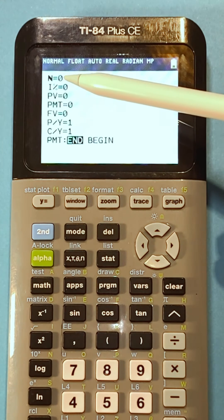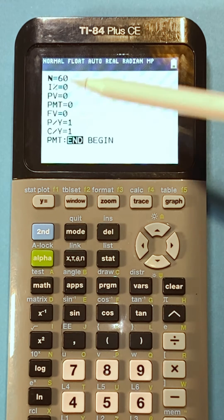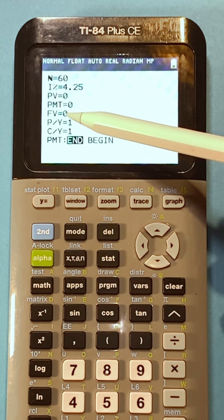N is always the number of compounding periods. I% is always an annual interest rate as a percentage. PV is your present value and FV is your future value.